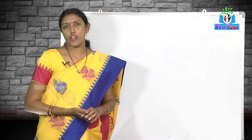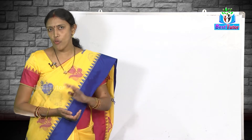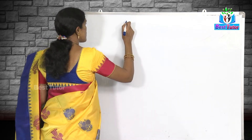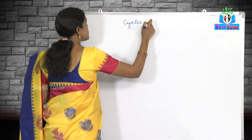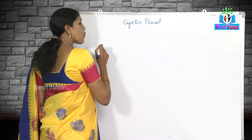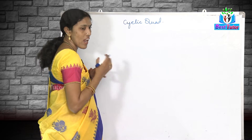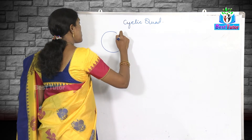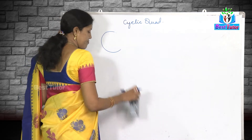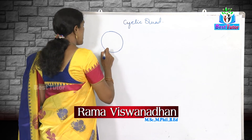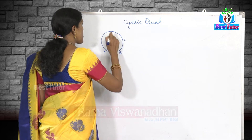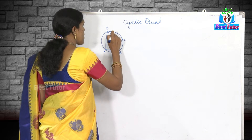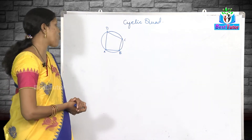We have already dealt with quadrilaterals — a quadrilateral is a closed figure bounded by four line segments. Now, what does the word 'cyclic' mean? A quadrilateral whose all vertices lie on a circle is called a cyclic quadrilateral. For example, this is a circle and A, B, C, D are four points on the circle. If I join them I get a quadrilateral, so such a quadrilateral is called a cyclic quadrilateral.